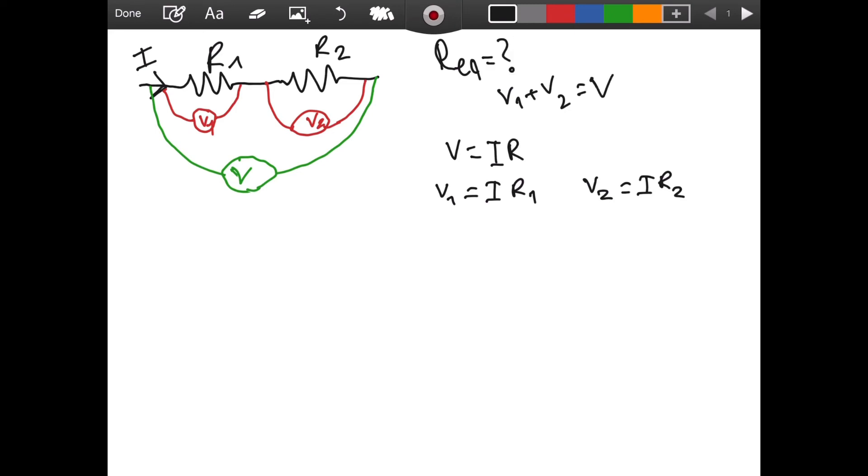So let's substitute these values in this equation. And if we do that, we get that instead of V1, I am writing I R1, plus instead of V2, I am writing I R2, equals instead of V, we are writing I times R.